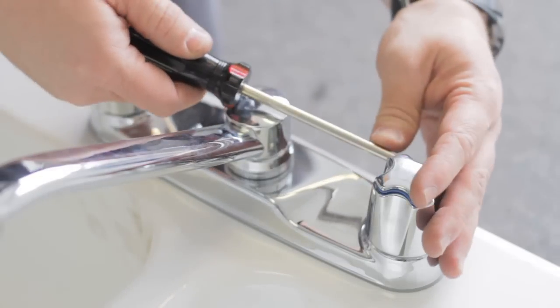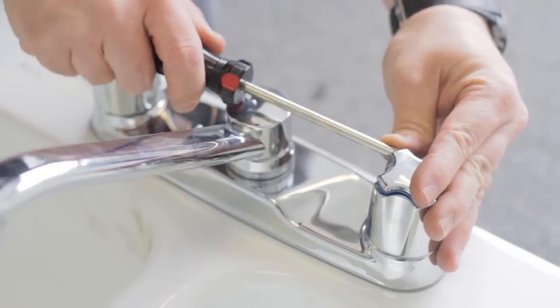I'm Terry with Towers Murray Plumbing, here to show you how to repair a leaking two-handle kitchen faucet. First thing you need to do, remove the handle.